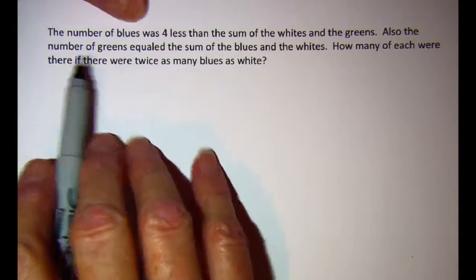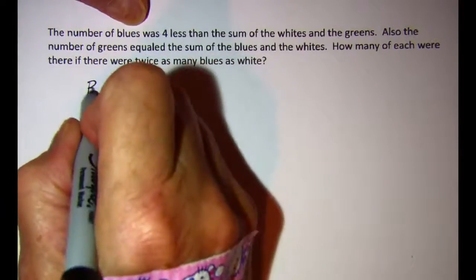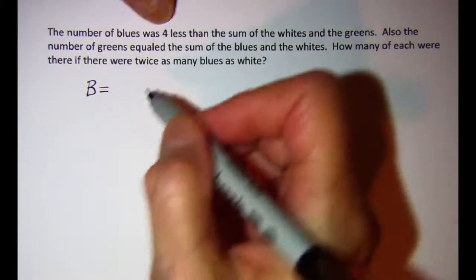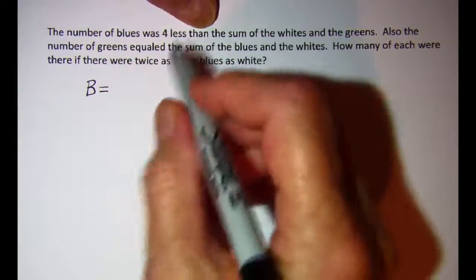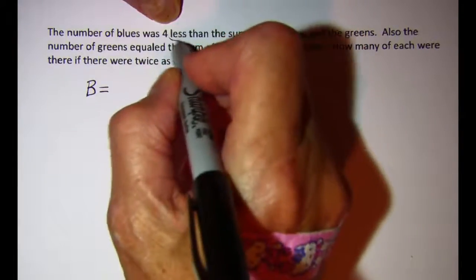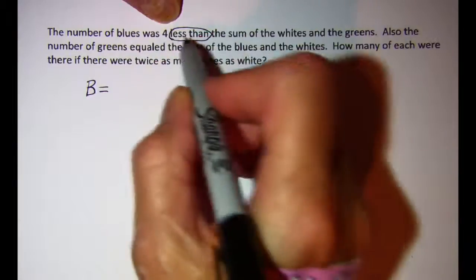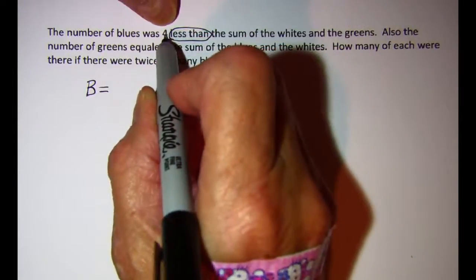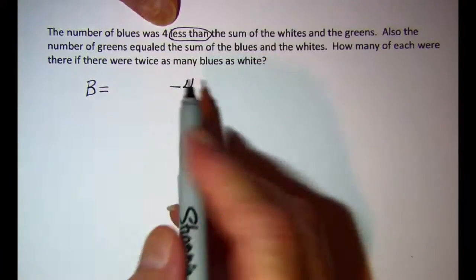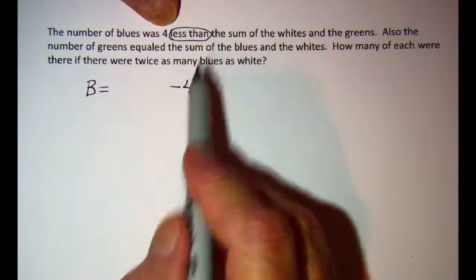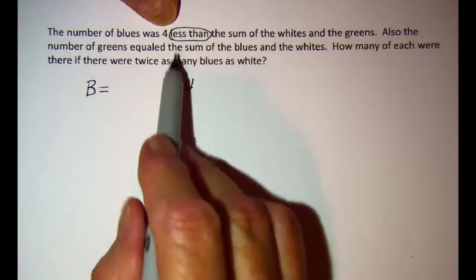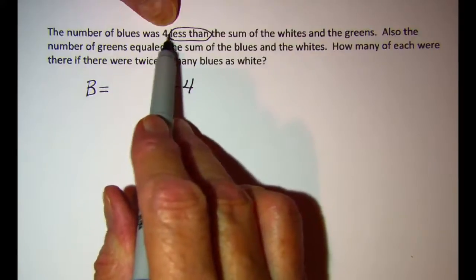The number of blues was four less than. Now whenever we see the words less than we have to proceed with caution and we have to scoot that four over and subtract it from something because it's four less than something. So anytime you see the words less than, scoot it over and put minus whatever this number is.